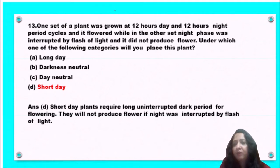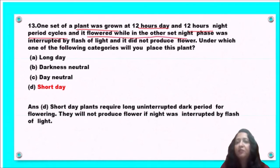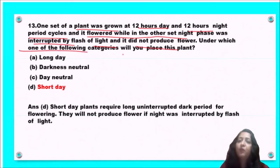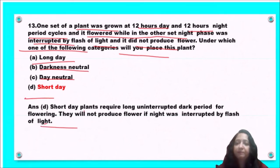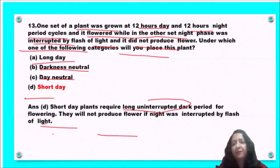Next question: one set of plants grown at 12 hours day and 12 hours night flowered, while another set whose night phase was interrupted by a flash of light did not produce flowers. Under which category does this plant fall — long day plant, day-neutral, or short day plant? Short day plants require long uninterrupted dark periods for flowering and will not produce flowers if the night is interrupted by a flash of light. So option D, short day plant, is the correct answer.